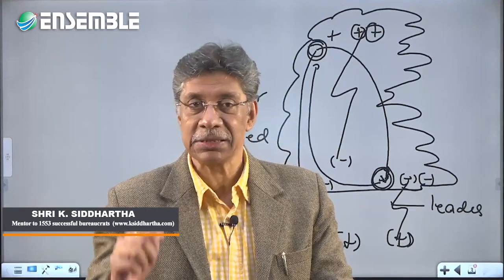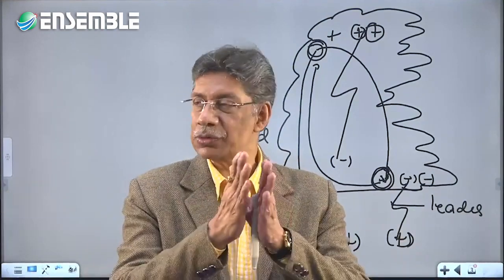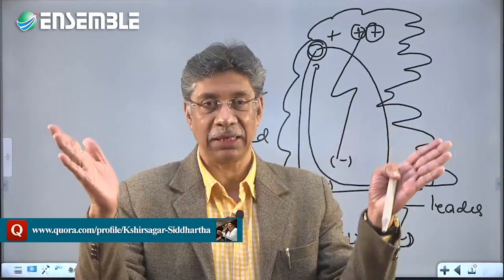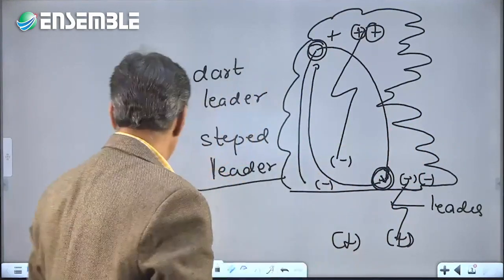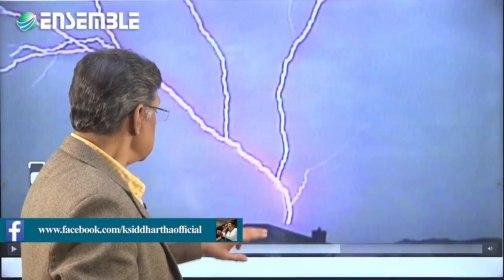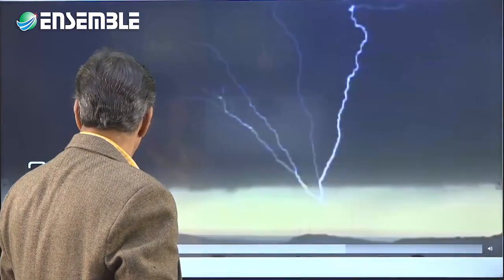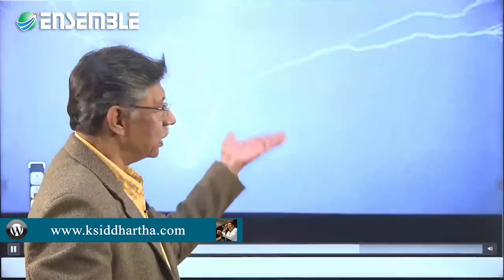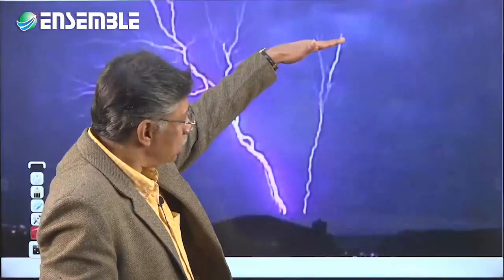Each dart leader is followed by a return stroke, which is why you see several branches of lightning. Once the path is illuminated it takes place again — there are a series of them. Typically a single lightning strike consists of two to four dart leaders plus return strokes, and electricity flows through these paths.